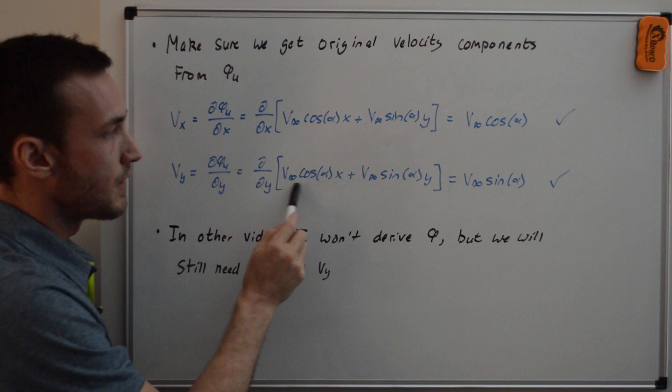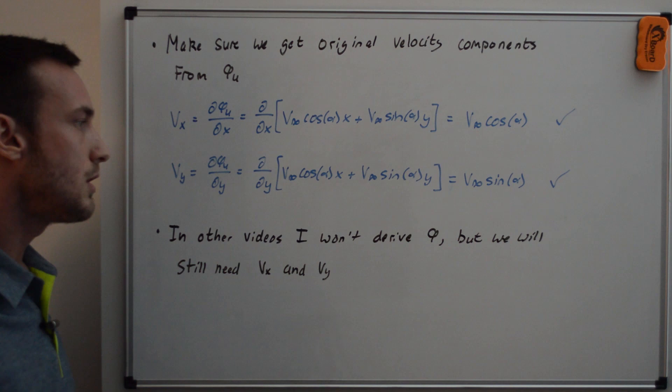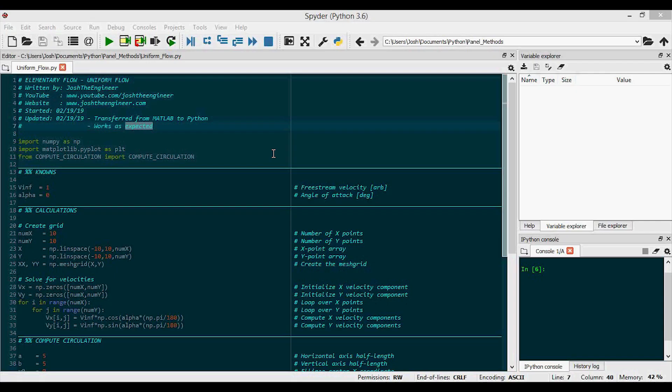Similarly here, this is not a function of y, so this goes to zero, and this taking the derivative with respect to y gives us v infinity sine alpha, that also checks out. And so in the other elementary flow videos that I'm going to do, I won't derive phi, but we'll still need to solve for vx and vy, and so that's why I did this circular logic here for the simplest uniform flow.